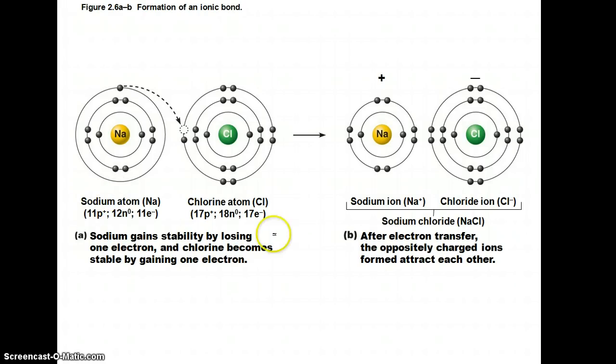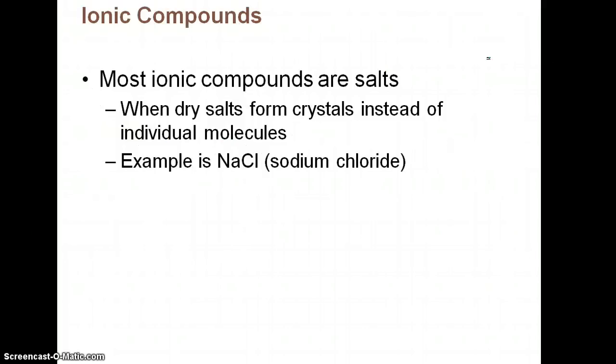So here we have sodium. Here we have chlorine. Chlorine, so basically sodium will give its valence electron over here to chlorine. Because of that, now sodium has a positive charge. Chlorine has a negative charge. And they are attracted to each other, so they have now formed an ionic bond. Ionic compounds are going to be your salts. We talked about this in class. When dry salts form crystals, when they are dry, they will actually form crystals instead of actually making individual molecules. So think of salt crystals that you add to your food.